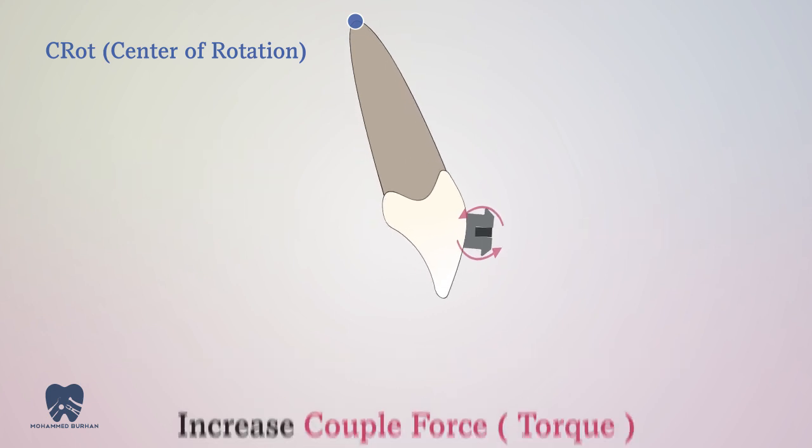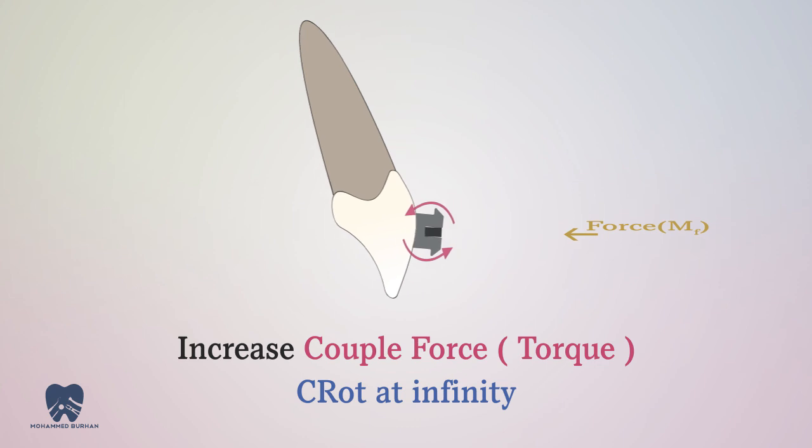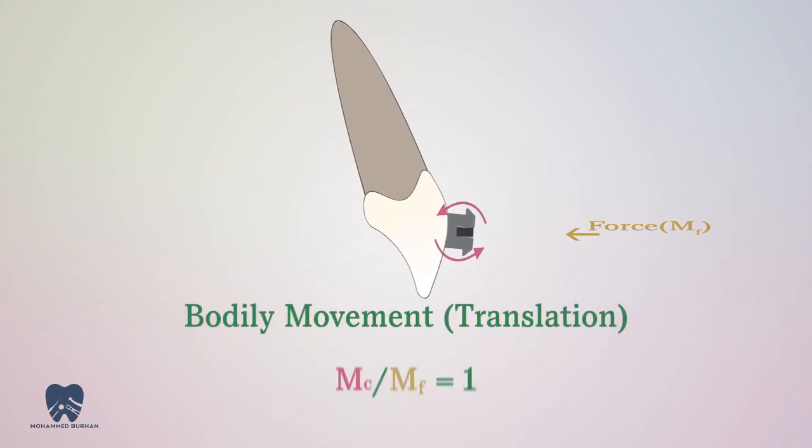What happens if we increase moment of couple? There is no center of rotation. The root and the crown will move together. This is called bodily movement.